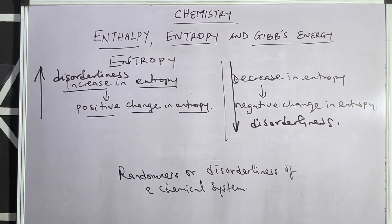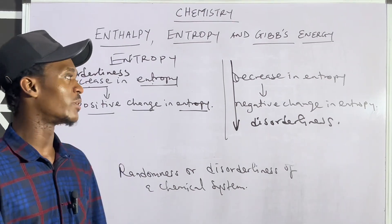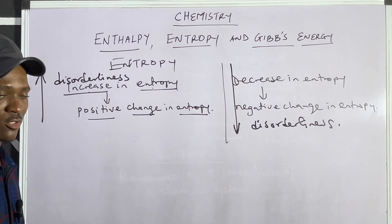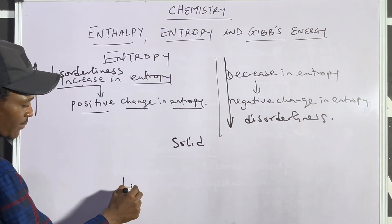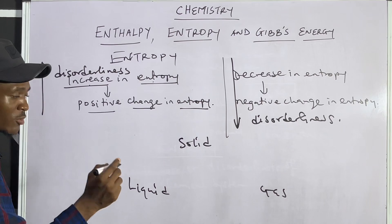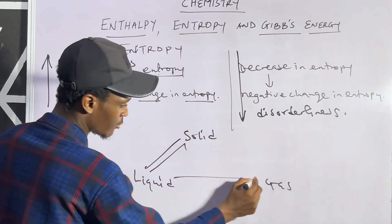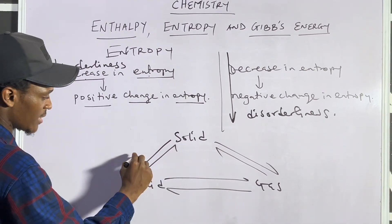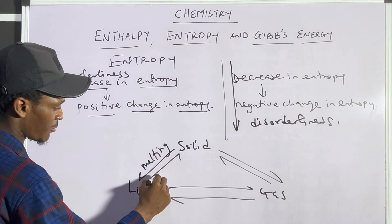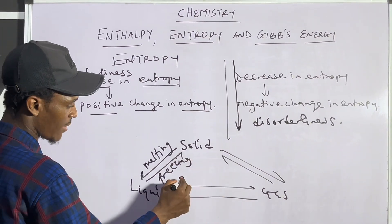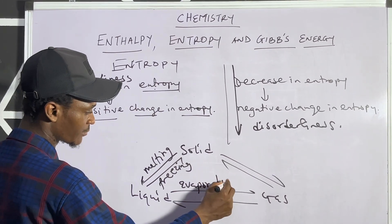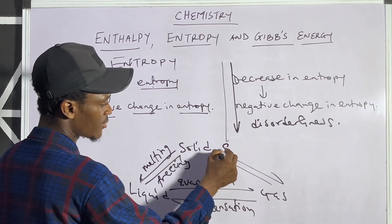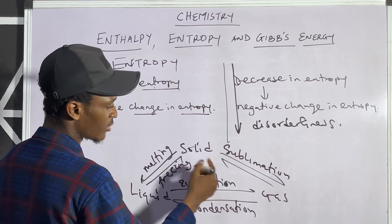With this, we can actually tackle questions coming under entropy. Let me use a case study: state conversions. The conversion of solid to liquid and liquid to gas. Converting solid to liquid is by a process known as melting. Liquid to solid is freezing. Liquid to gas is evaporation or vaporization. Gas to liquid is condensation. Solid to gas is sublimation, and gas to solid is deposition.